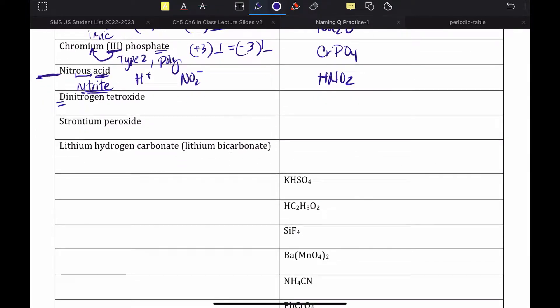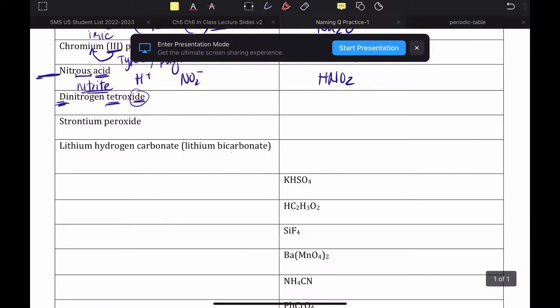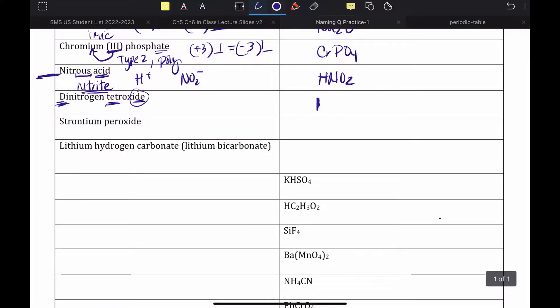Dinitrogen tetroxide. I've got a lot of clues here. Binary, numerical prefixes tell me that it's probably molecular. I'd go look at a periodic table and see nitrogen, oxygen, both nonmetals. So, I'm going to write what it says, N2O4.